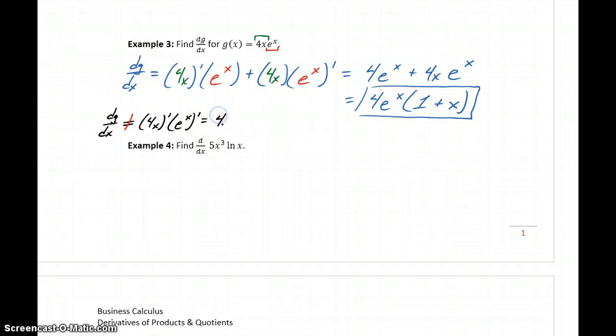We would end up with 4e^x. So if we evaluated that derivative incorrectly by just differentiating the first function and the second function, multiplying those together, we get a result that's different than what we get from applying that product rule.